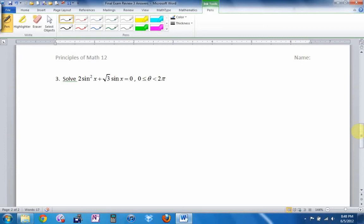Example two. Solve this one. Another quadratic trig. This one factors with GCF. So when I factor out a sinx, I'm left with 2sinx + √3, and that'll equal zero, which means my roots are sinx = 0 and sinx = -√3/2.